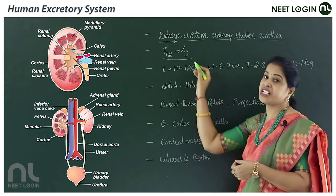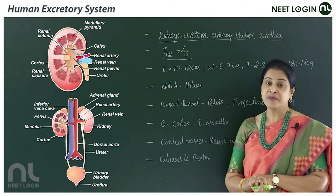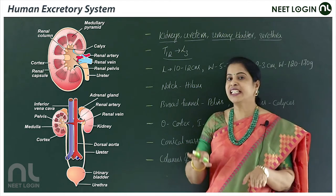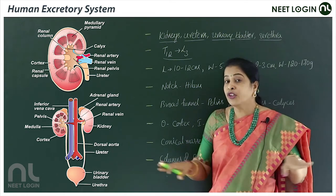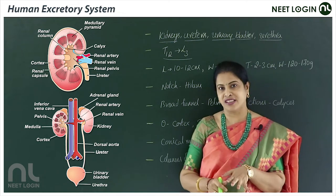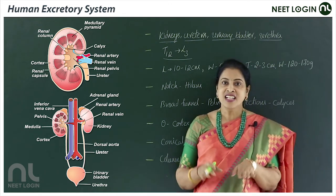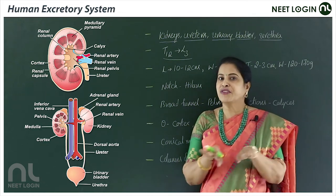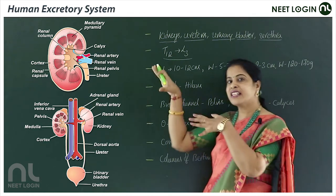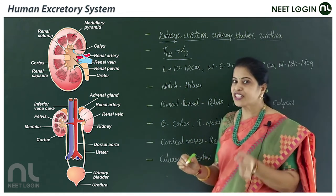The kidneys extend from the last thoracic vertebra (T12) to the third lumbar vertebra. Regarding the location of both kidneys, the right kidney is somewhat inferior because of the presence of the liver on the right side, compared to the left kidney, as you can observe in the picture.